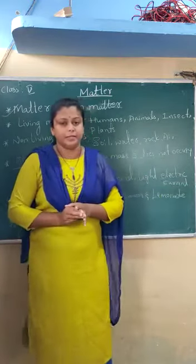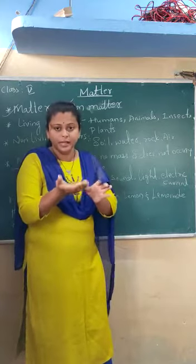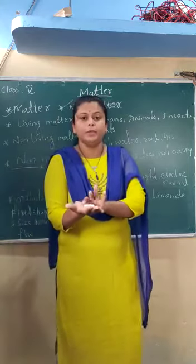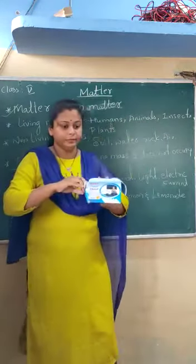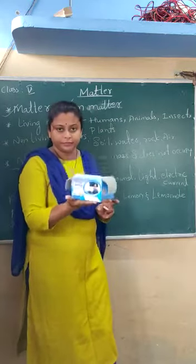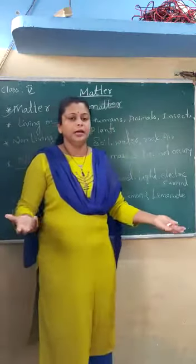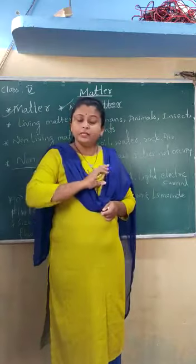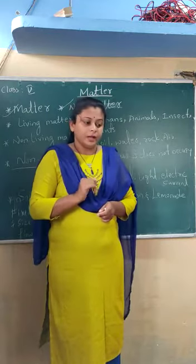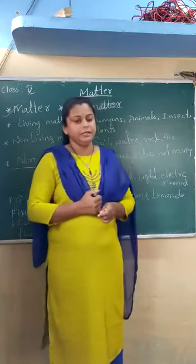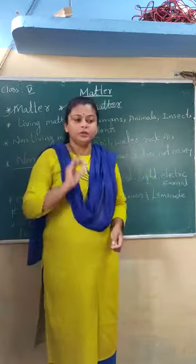For example, I have a chocolate here. This has some weight and it needs some place to occupy — here on my palm. And here I have a box. This box has some weight and it needs some place if I keep it on the ground. Any substance which has these two properties — occupies space and has mass or weight — is called matter.